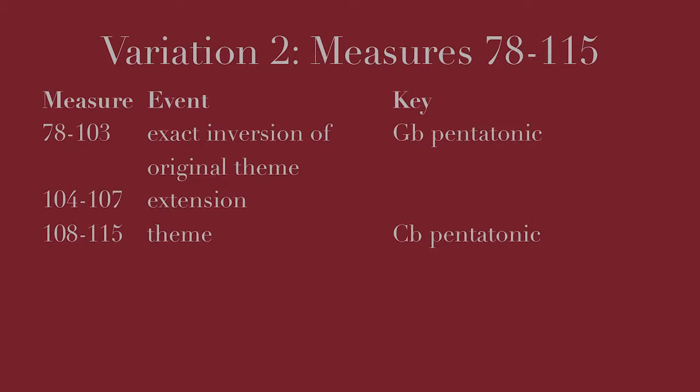Variation 2, the Larghetto variation, presents the theme twice in exact intervallic inversion — in other words, when the pentatonic melody from the opening goes up by step, this one goes down by step, with exactly the same intervals throughout, inverted. The variation begins by harmonizing using the harmonies alternating A-flat minor seven and E-flat minor seven. The inverted melody then continues a couple of times, and then at measure 108, it is presented back in its original form by the trumpet solo using the key of C-flat pentatonic.